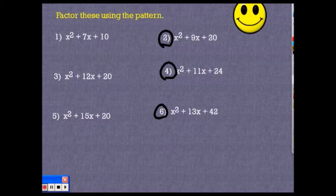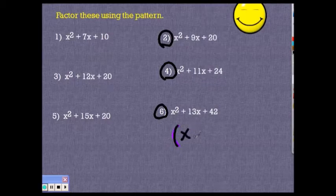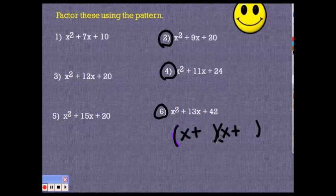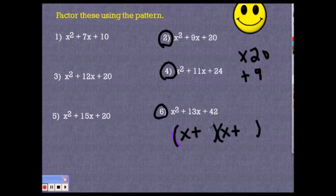Okay, number 2. All I have to do is figure out these two numbers. I'm looking for two numbers that multiply together to give me 20 and that add up to 9. That's pretty easy — 5 and 4. So this is my factored answer for number 2.